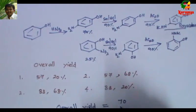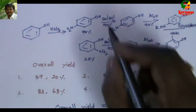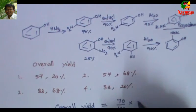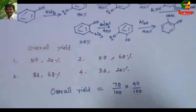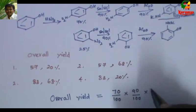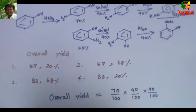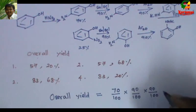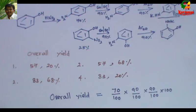For the first one — 4-hydroxyacetanilide — it is (70/100) multiplied by (90/100) multiplied by (90/100), then multiplied by 100. This is the general formula to calculate the overall yield, whatever may be the number of steps, even if it may be 20 steps.